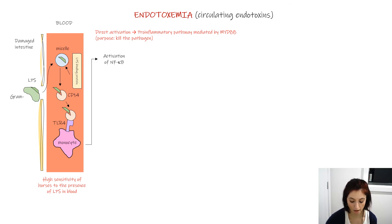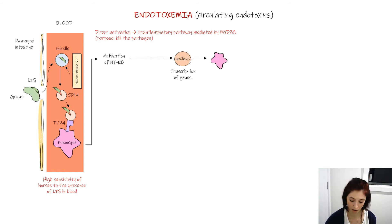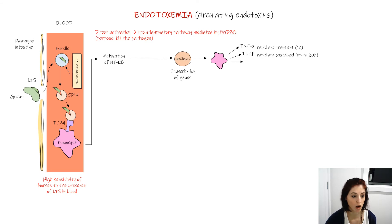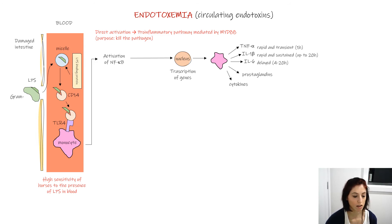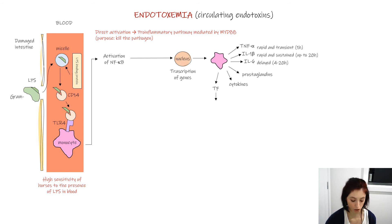Cell signaling events culminate with the transcription of genes and protein expression. Cytokines produced in this way are principally pro-inflammatory cytokines such as tumor necrosis factor alpha, interleukin-1 beta, and interleukin-6. Also prostaglandins and other cytokines are produced, and there is activation of the tissue factor with activation of the coagulation cascade and development of coagulopathies.